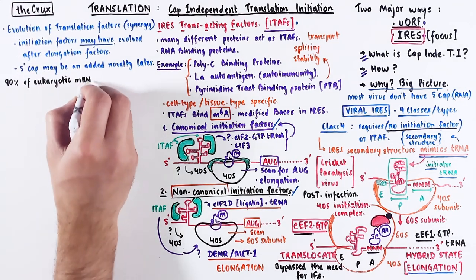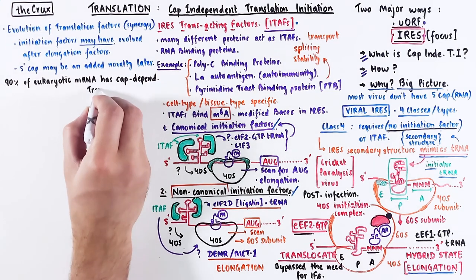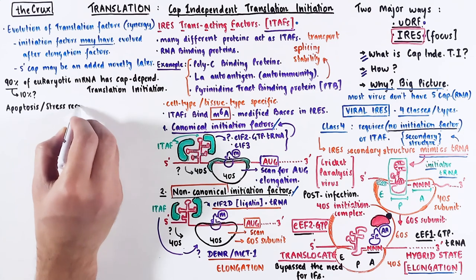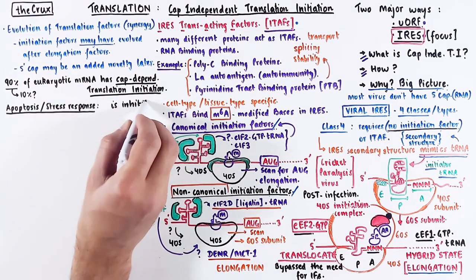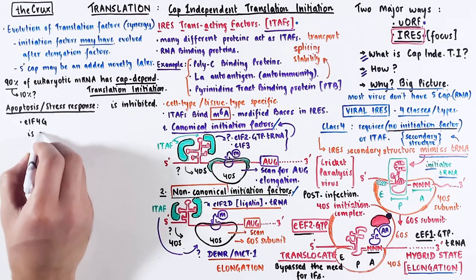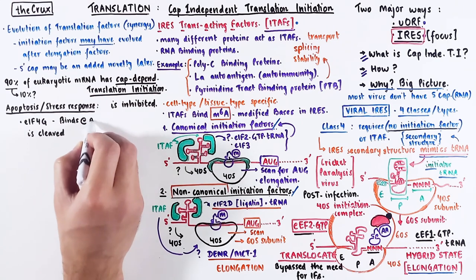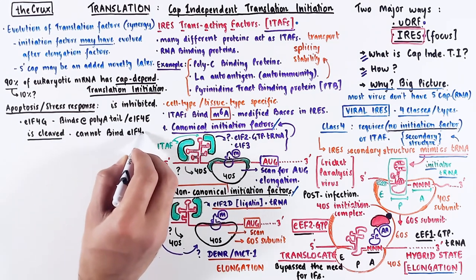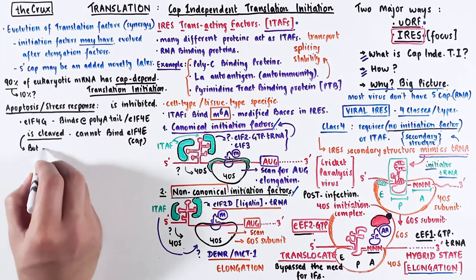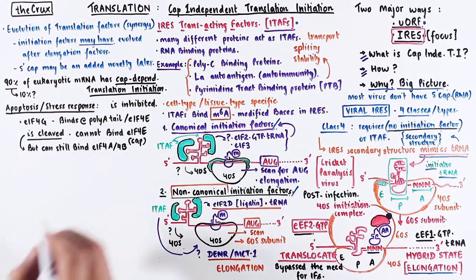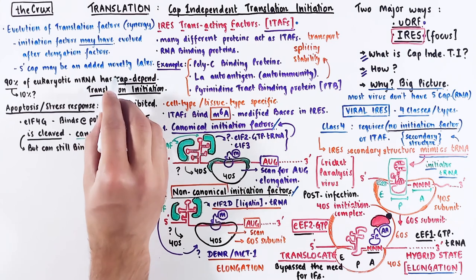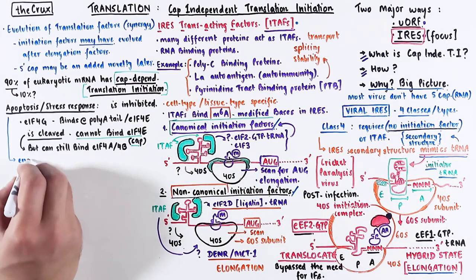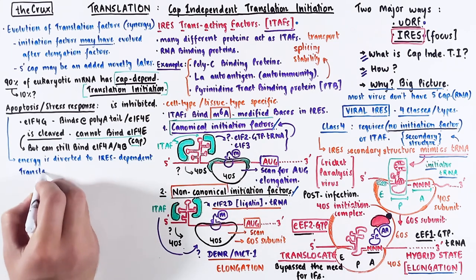90% of eukaryotic mRNA depends on the 5' cap for translation initiation. What about the remaining 10%? It turns out that during apoptosis or stress response, cap-dependent translation initiation is inhibited. Specifically, during apoptosis, initiation factor 4G is cleaved. Since 4G binds to the poly-A tail and also interacts with initiation factor 4E, if 4G is cleaved, it can no longer bind to 4E at the cap. Even if it can bind to 4A and 4B factors, cap-dependent translation initiation cannot start. But the cleaved EIF4G can still take part in canonical initiation through ITAFs. So during apoptosis or stress response, energy is diverted to cap-independent translation initiation.